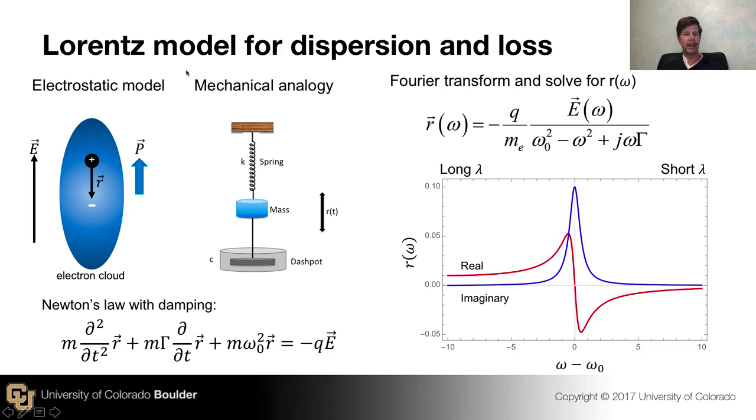So we're going to use the simplest possible model developed by a guy named Lorentz, fully classical. And he said, let's imagine that a material is made up of atoms. Those atoms have a massive positively charged nucleus and a lighter negatively charged electron cloud around them.